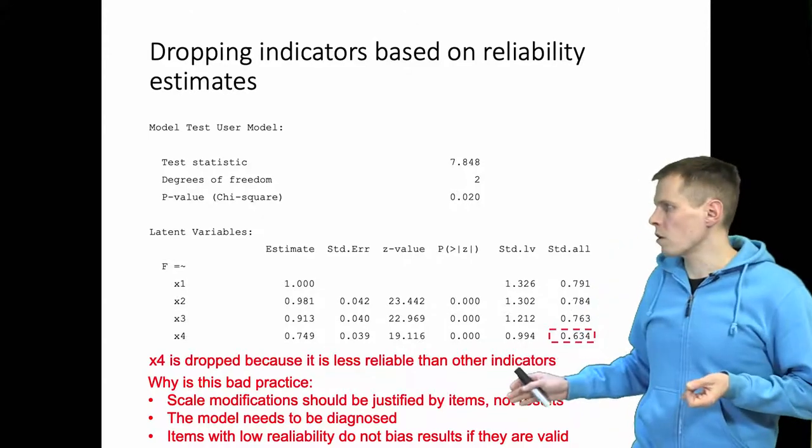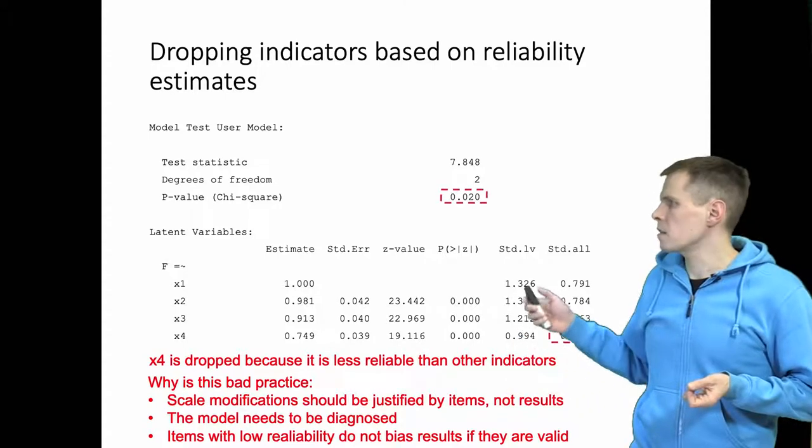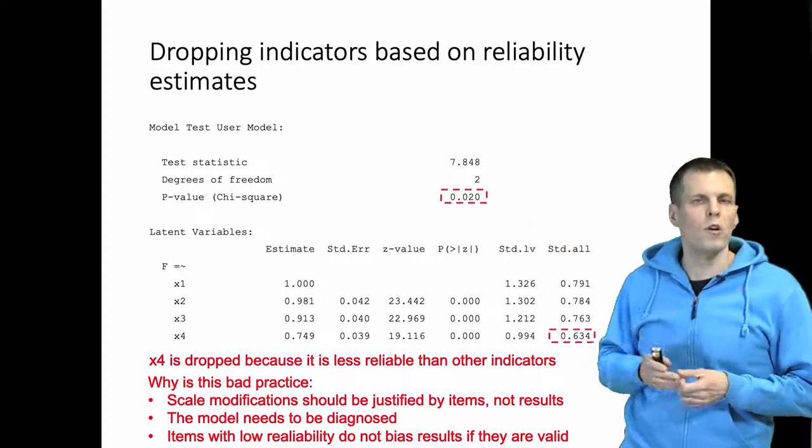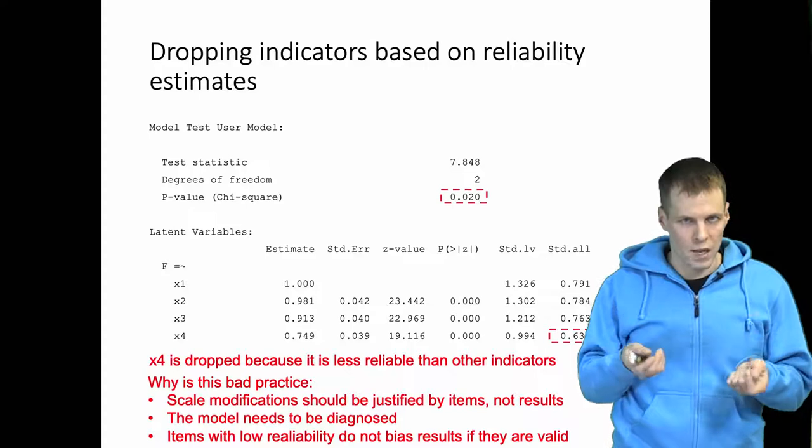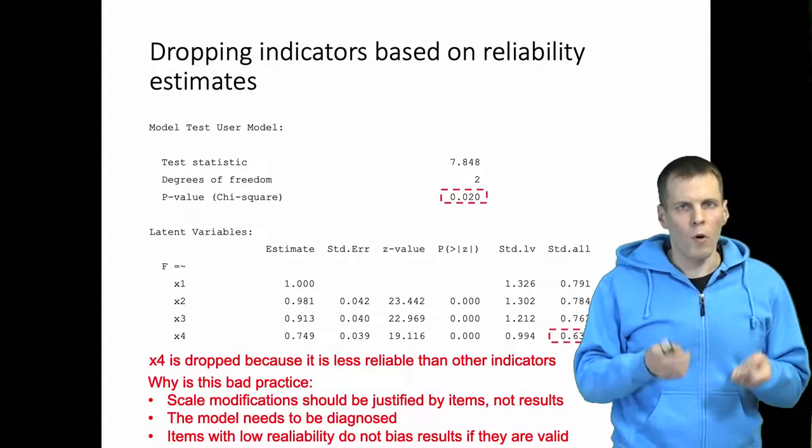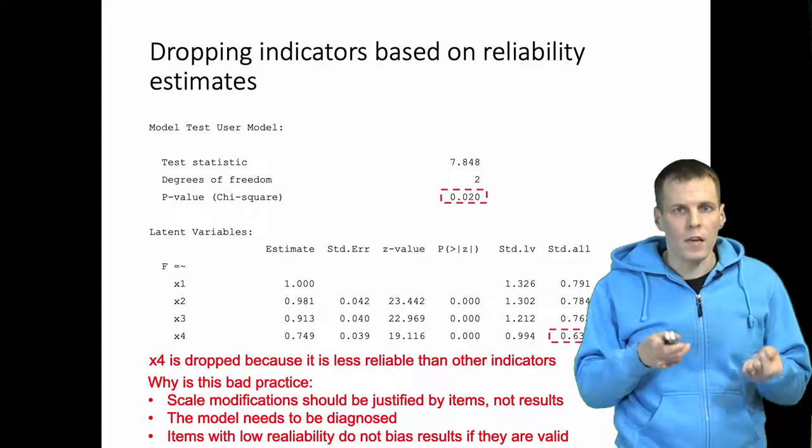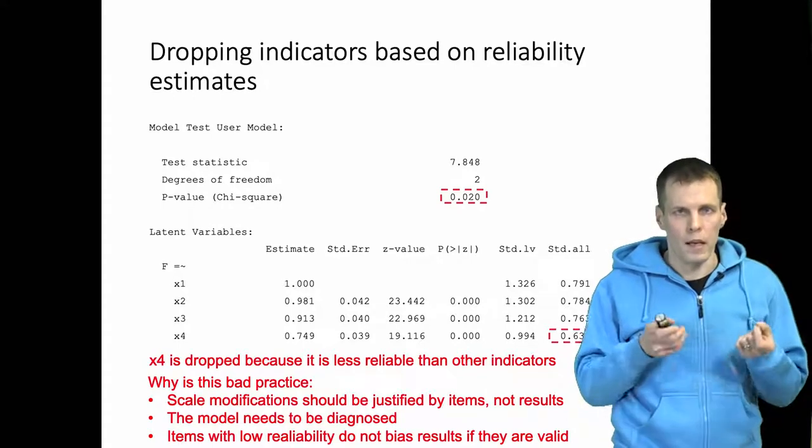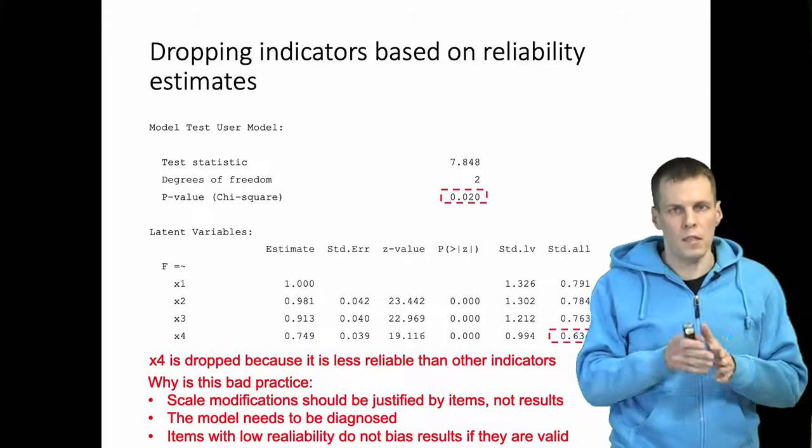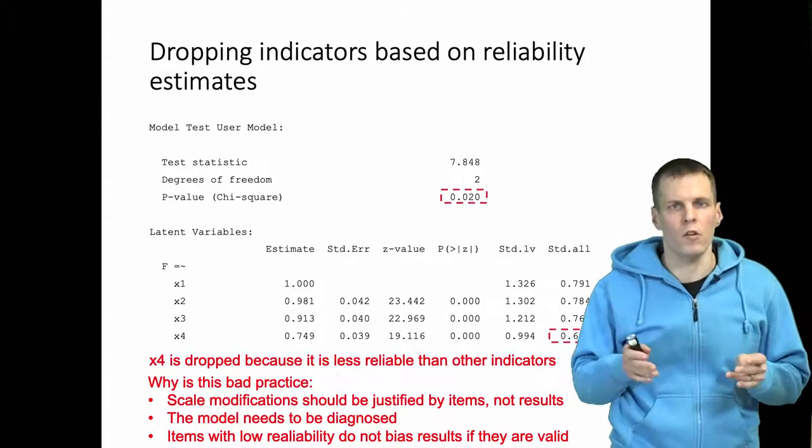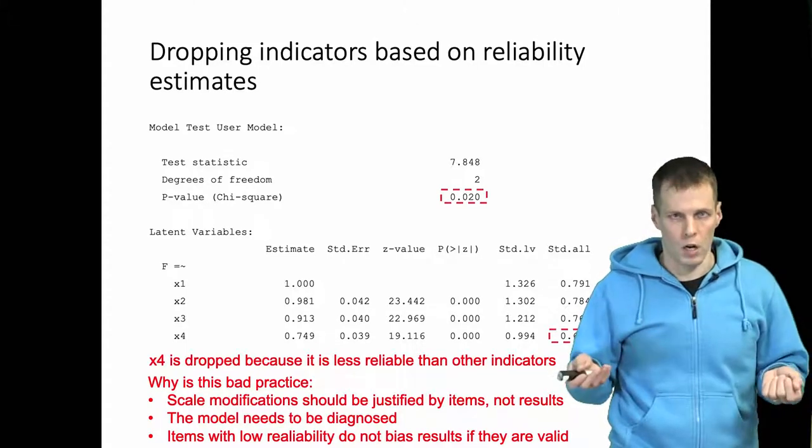Also, the model needs to be diagnosed. It has a significant chi-square which means that there is unmodeled dimensionality. A poor reliability or low reliability of an indicator itself does not cause any problems because it just increases the error variance of the indicator, and that is appropriately modeled in the model.